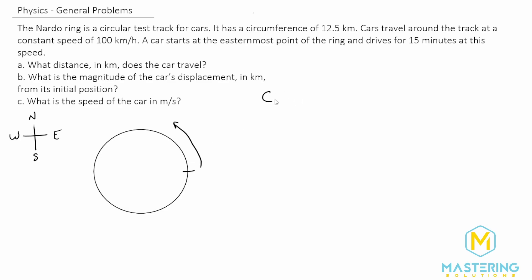So they tell us that the circumference of the track is 12.5 kilometers. The formula for circumference, of course, C is equal to 2 pi times the radius. And they tell us that the velocity that they drove was 100 kilometers per hour.